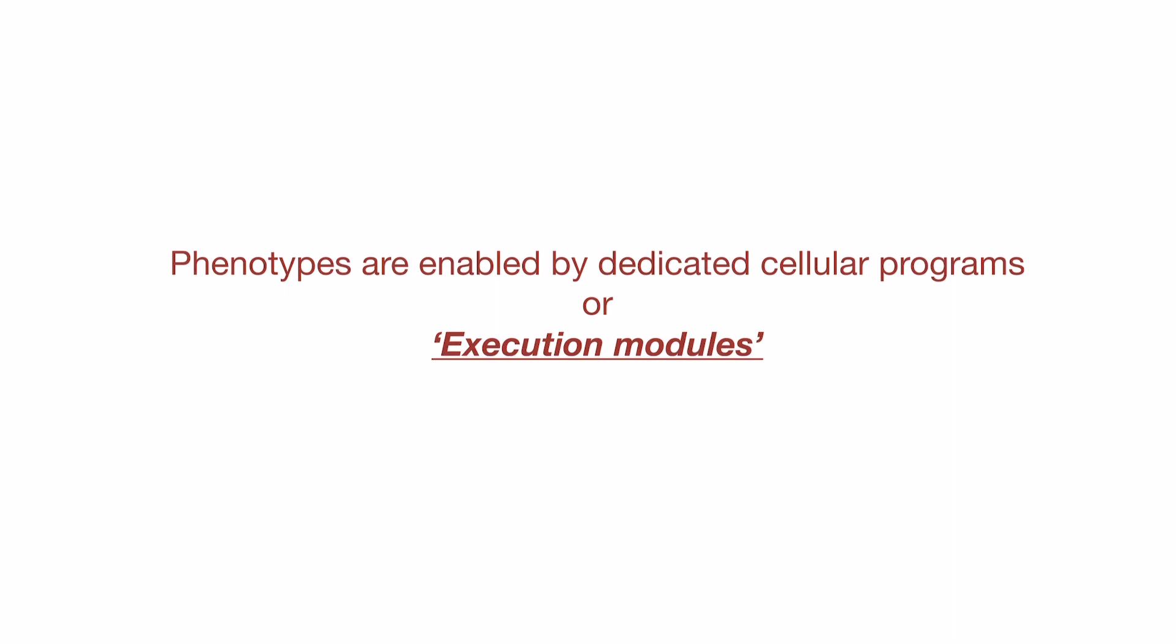What I would like to propose is that the good way of thinking about this is to focus on dedicated cellular or molecular level programs that we would term execution modules that are fully dedicated to execution of some phenotypic outcome. For example, it could be, as we'll discuss today, cell death or controlled cell death, apoptosis. It could be, in some other examples, differentiation programs or cell proliferation programs or some other programs. And as long as we understand them, I will argue we can actually understand the phenotypes.